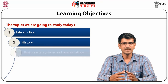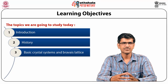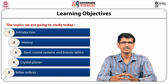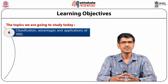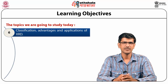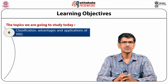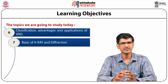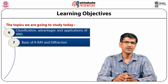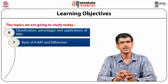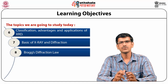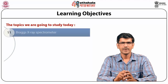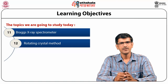After that, we will discuss the basic crystal systems and Bravais lattices, then crystal planes and how to find Miller indices. Moving further, we will study the classification, advantages, and applications of XRD. As XRD comprises two words — X-ray and diffraction — our next slides will discuss the basics of X-rays and diffraction, the basic principle including Bragg's law, and the different XRD methods: the Laue photographic method, Bragg's X-ray spectrometer, rotating crystal method, and powder method.